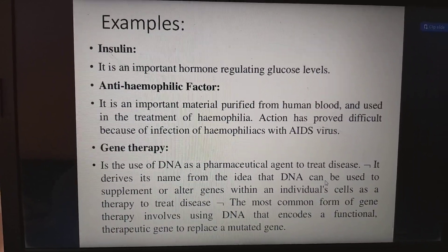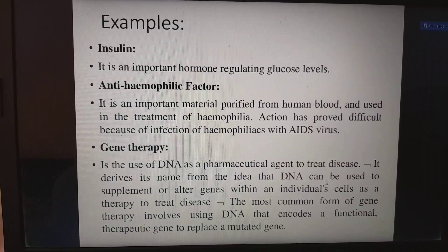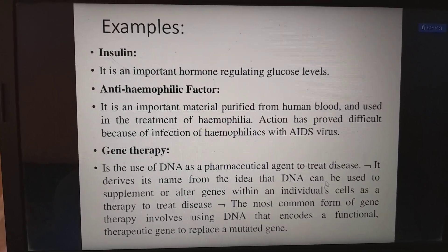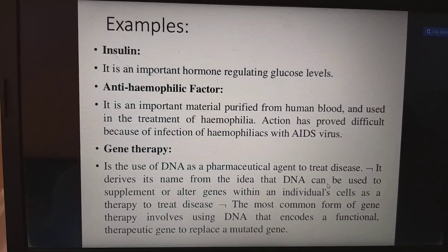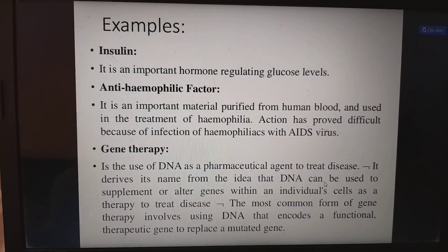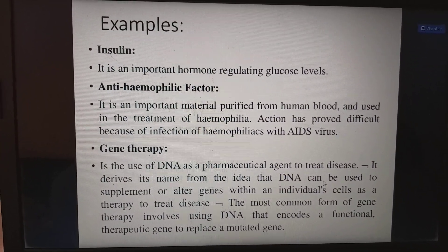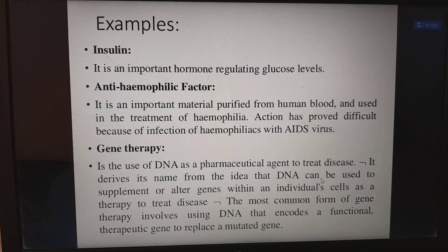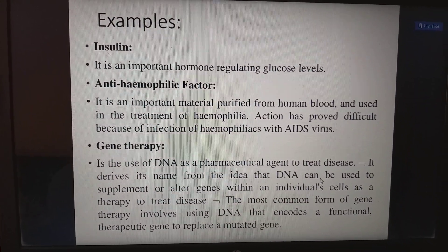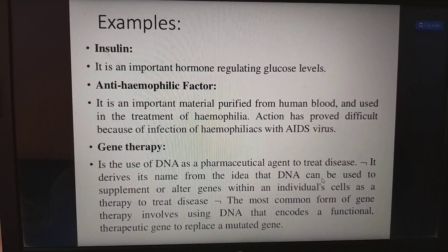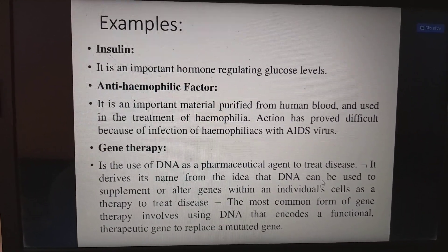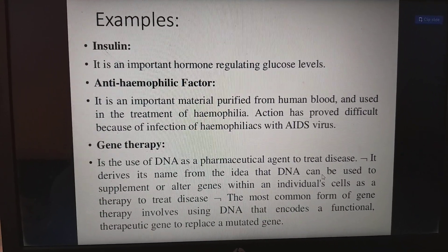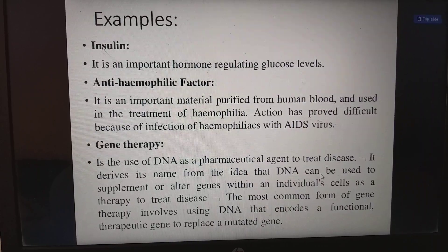Key pharmaceutical examples include insulin, an important hormone regulating glucose levels — producing more insulin requires biotechnological techniques. The anti-hemophilic factor is an important material purified from human blood used in the treatment of hemophilia, though its use has been complicated by infection of hemophiliacs with the AIDS virus. Gene therapy is the use of DNA as a pharmaceutical agent to treat disease, supplementing or altering genes within individual cells as therapy.